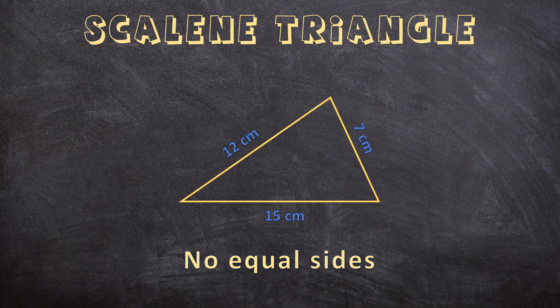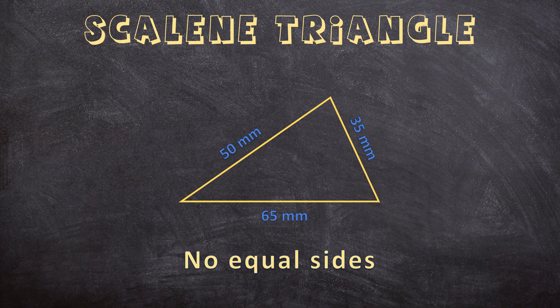Let's look at one more example. This side can be 50 mm, this side 35 mm, and this side 65 mm — so again, none of them have the same length. This is a scalene triangle. And how do you think we will indicate that this is a scalene triangle without using measurements? We can indicate that by using a different amount of stripes on the different sides: one side has one stripe, the other side two stripes, and the other side has three stripes — meaning none of them are the same in length.